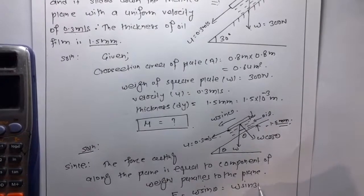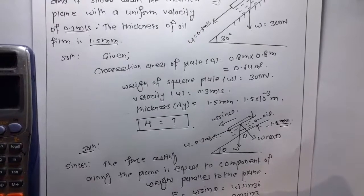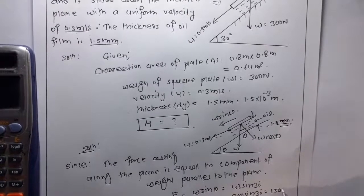W sin theta is 30 degrees, so this is 300 sin 30, which is 150 Newton.